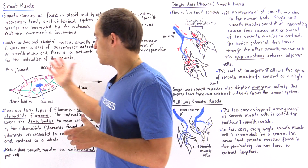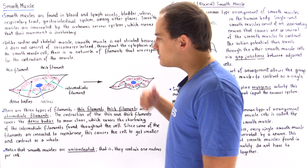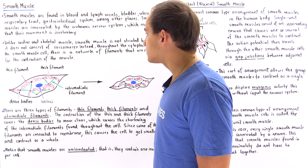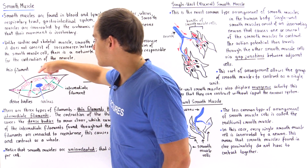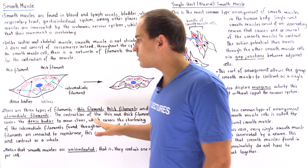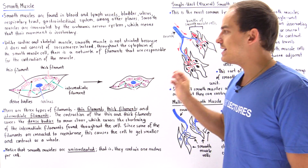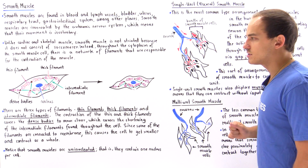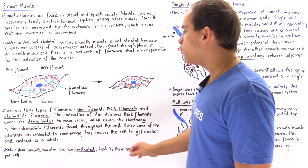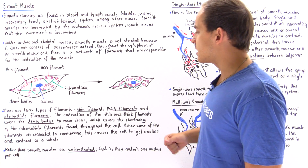Let's take a look at the following diagram of a single smooth muscle cell. The membrane is shown in black and the nucleus is shown in blue. Notice we only have a single nucleus in any given smooth muscle cell, which means smooth muscle cells are uninucleated, just like cardiac muscle cells.